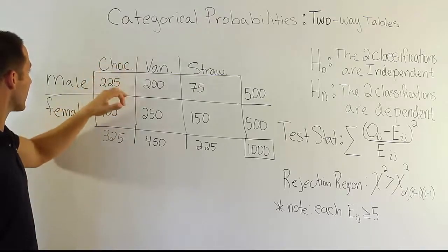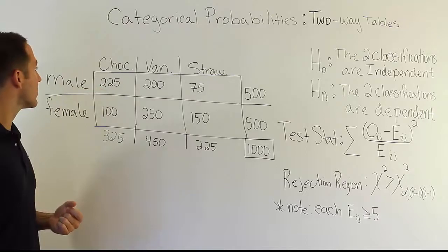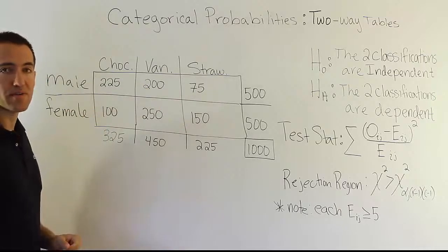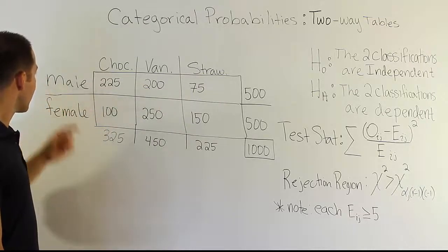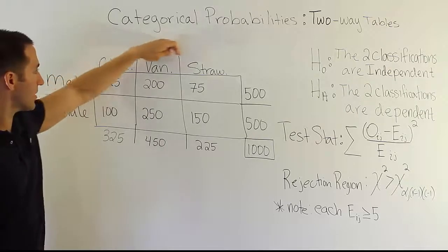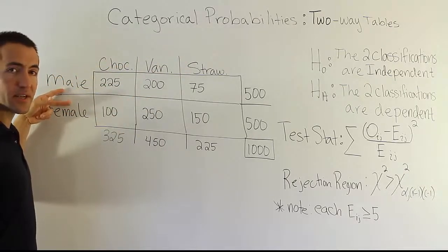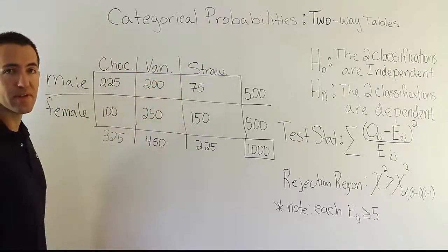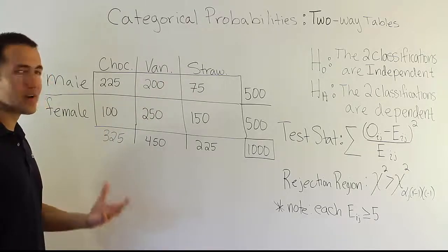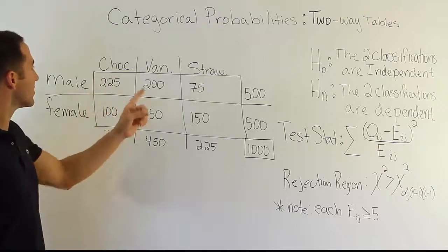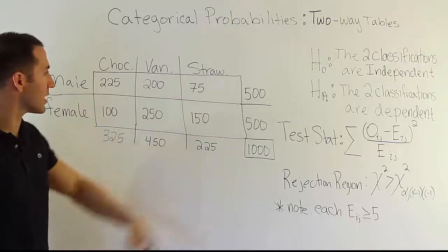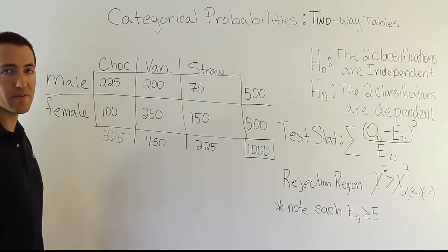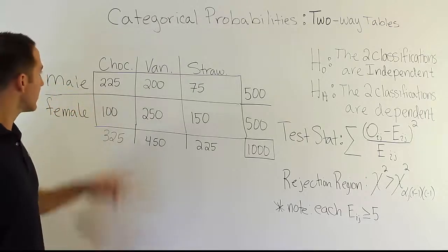For example, 225 represents the chocolate ice cream and the male category at once. Whereas before we just had chocolate, vanilla, and strawberry with one set of numbers. Here we have two categories: the sex of the person surveyed, and their preference among these three classic ice cream flavors — chocolate, vanilla, and strawberry, like you'd find in a Neapolitan ice cream box. They surveyed a thousand people: 500 men, 500 women, asking them to pick their favorite flavor.